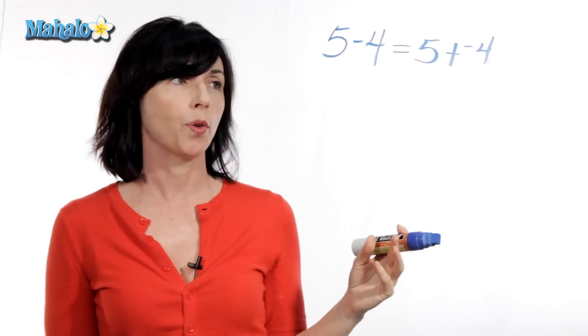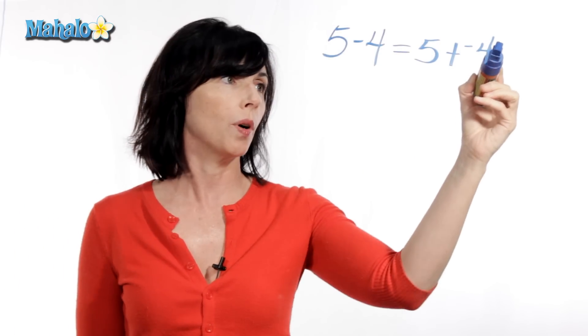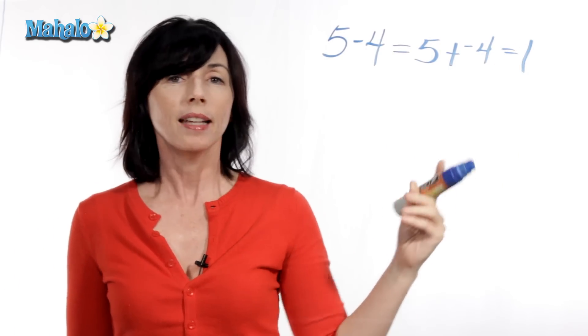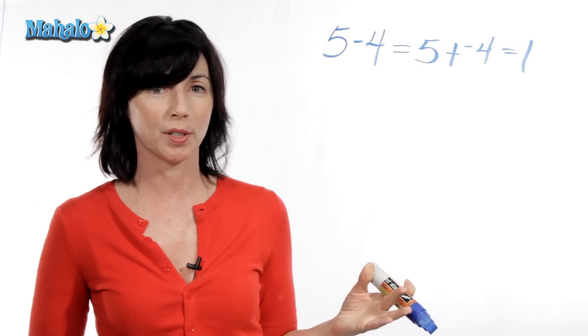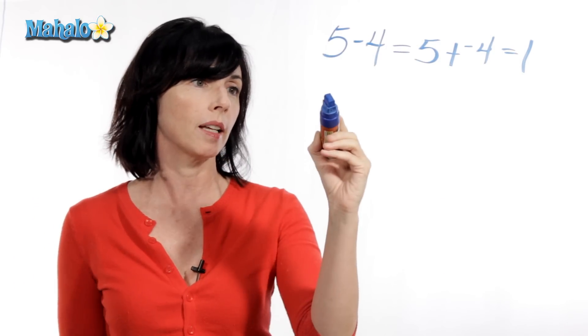So, we know 5 minus 4 is 1, so 5 plus negative 4 is also equal to 1. Now, this probably seems pretty simple and there's maybe no reason to do this, but what about something like this?